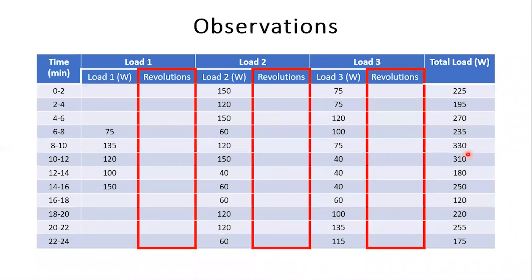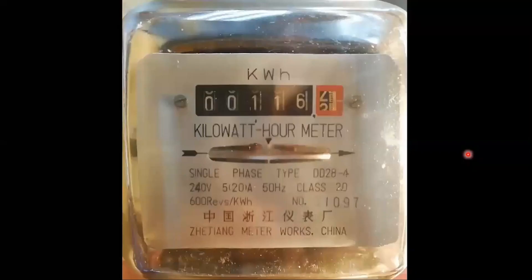During the practical, our main observation will be the number of revolutions of the energy meter disk in two minutes for different loads. One way of getting the number of revolutions is to measure the time taken for one revolution, then by taking the reciprocal, get the number of revolutions per unit time, hence finding the number of revolutions in two minutes.